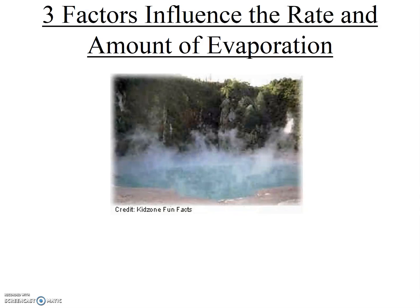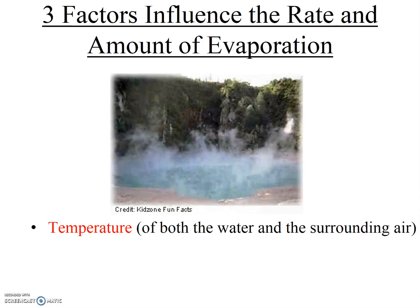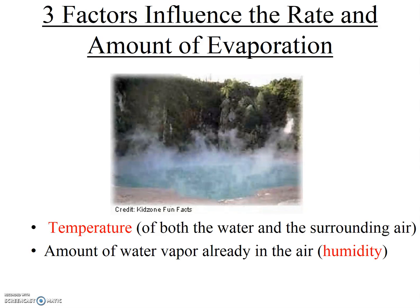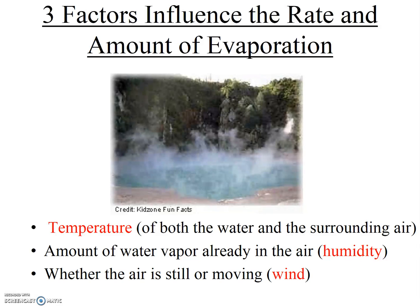There are three factors that influence how fast evaporation occurs and how much evaporation occurs. You should be able to list these three factors and discuss each one of them. First, temperature of the water and of the surrounding air can affect evaporation rates. Second, the amount of water vapor already in the air — the humidity — can affect evaporation rates. And lastly, wind, whether the air is still or moving, can affect how fast evaporation occurs. So temperature, humidity, and wind all affect the rate and extent of evaporation.